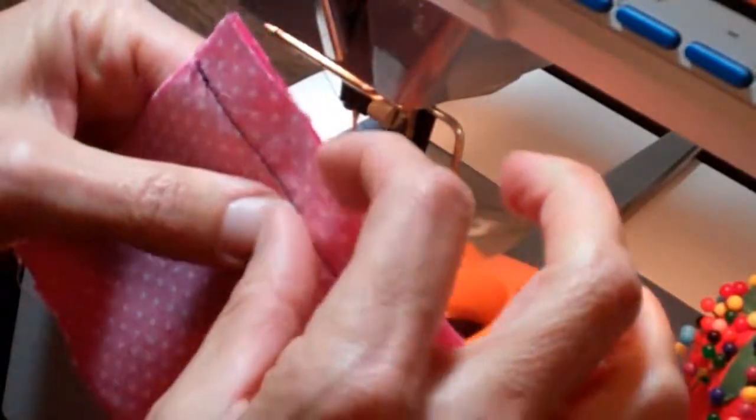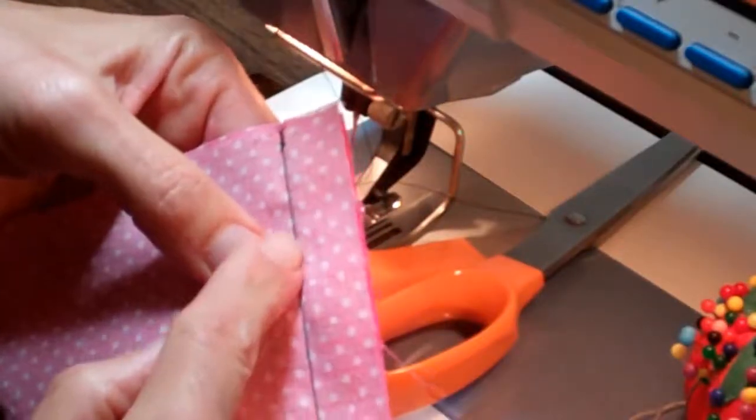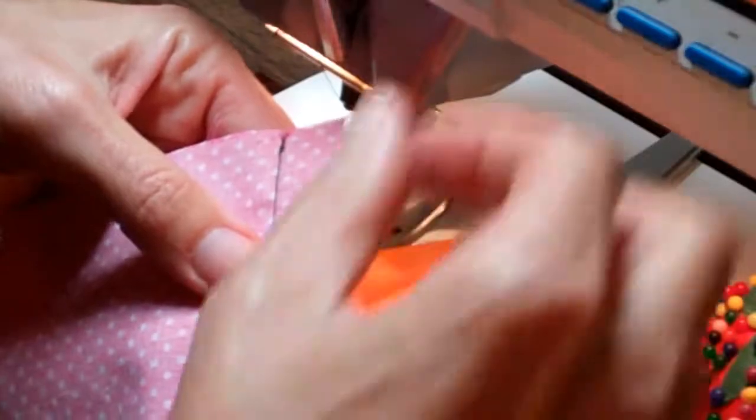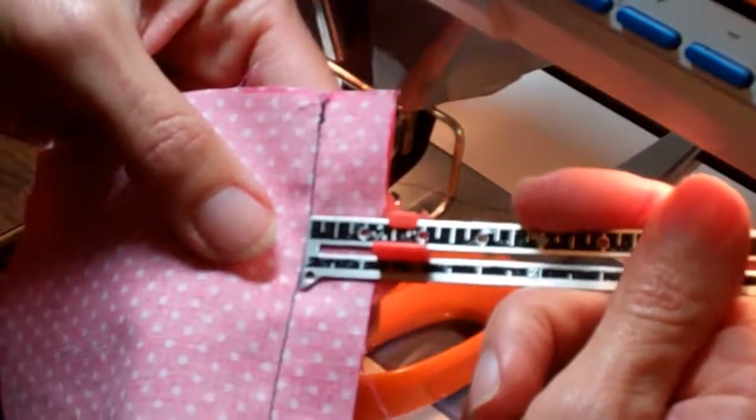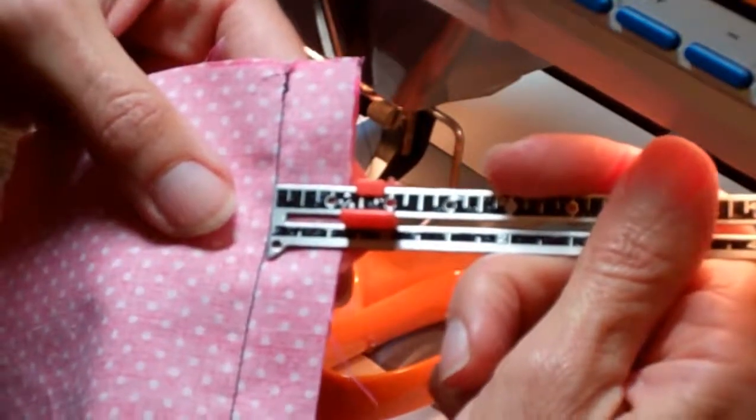Now when we're talking about seam allowances, the part that is between your stitching and the edge of the fabric, that is the seam allowance. So this has a 5/8 inch seam allowance, which is the standard width for any sewn garments.